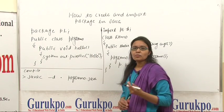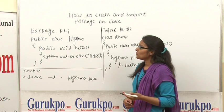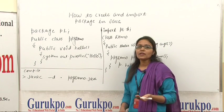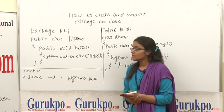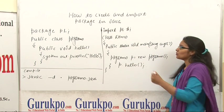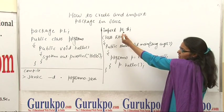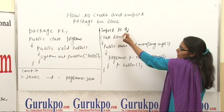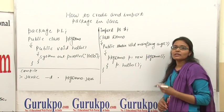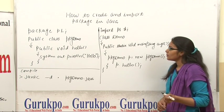Now we can import this package into our other classes and use the method hello in those classes. For importing the package, you have to use the keyword import, then the package name dot star — for example, import p1.*. Using a star means we are importing all the classes and methods of package p1.